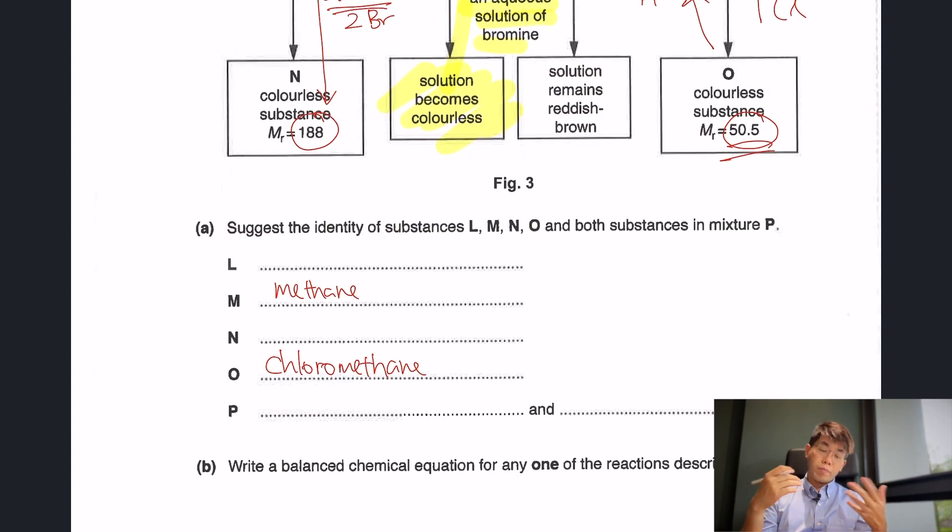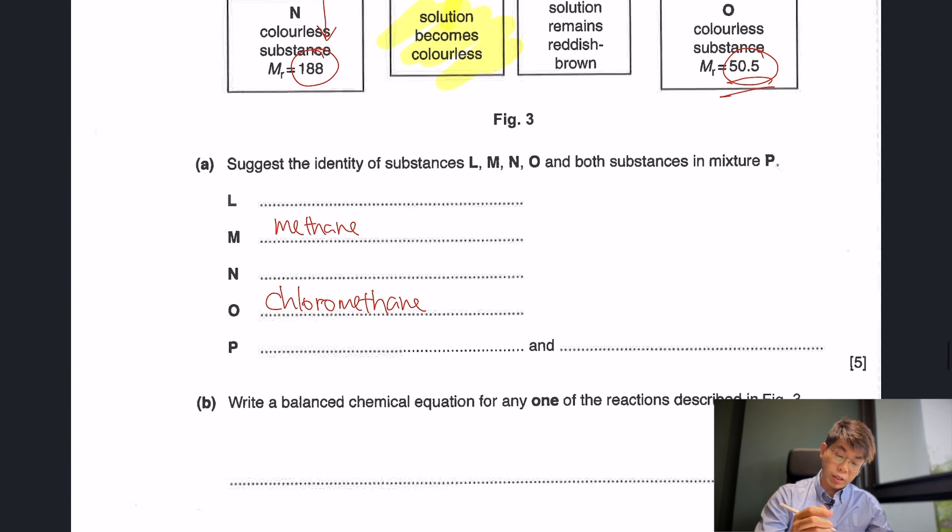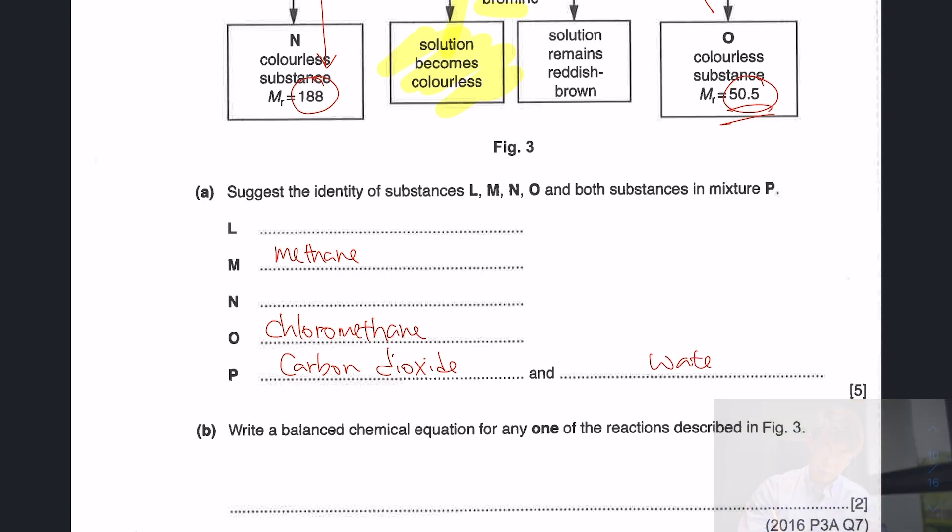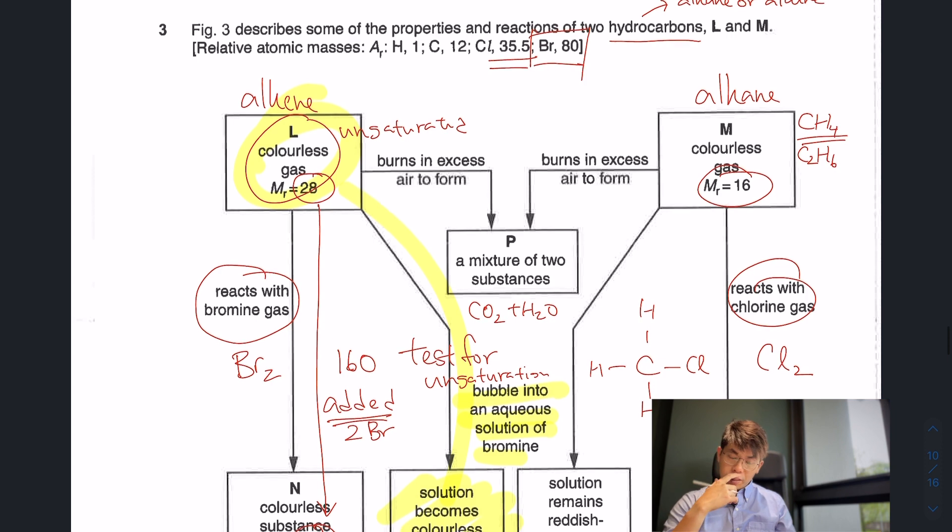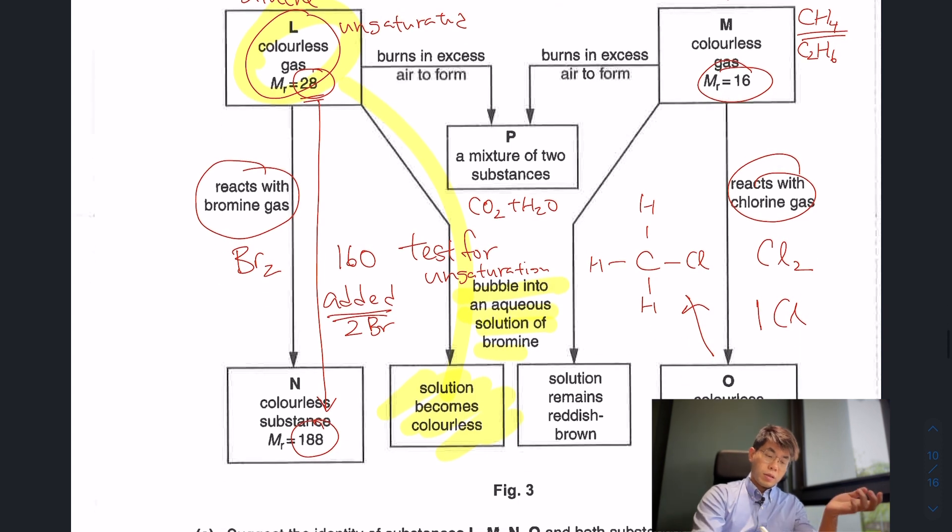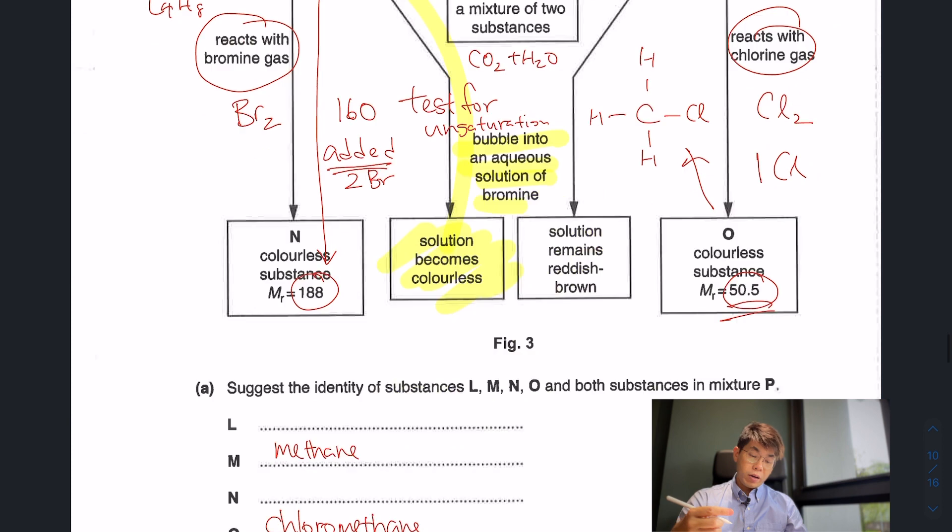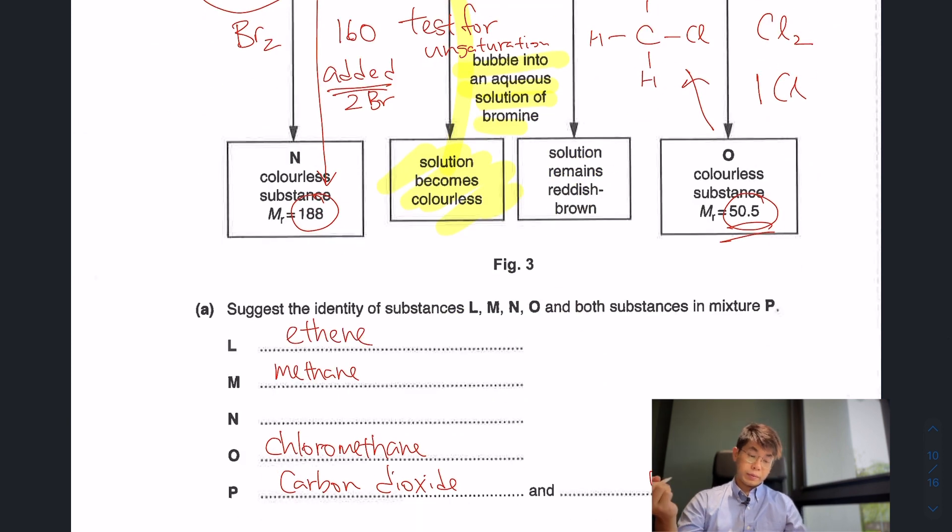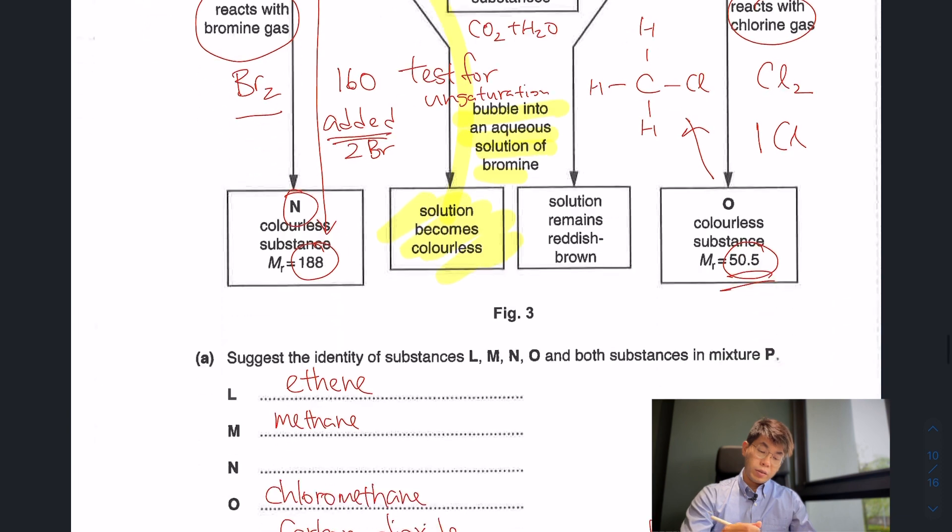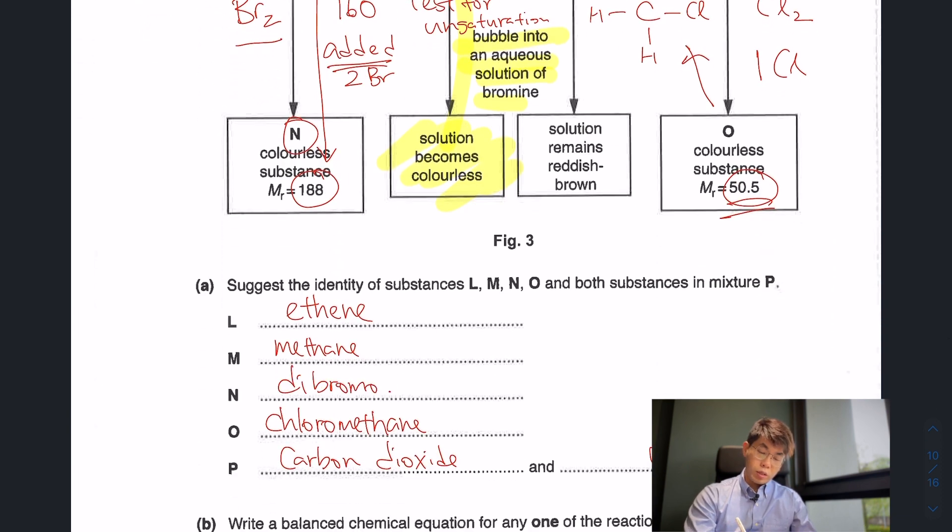P, mixture of two substances. We know combustion mixture of two substances will be carbon dioxide and water. And then we have L, which is an alkene with MR 28. If it's C2H4, C3H6, or C4H8, which of this combination will form 28? Only C2H4 will form 28. So L would therefore be ethene.